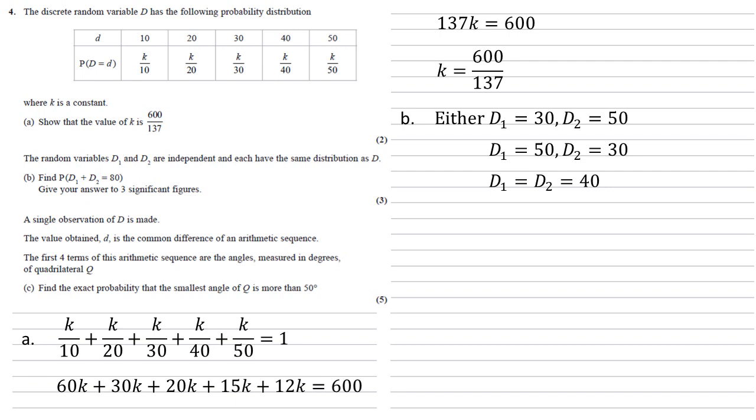Our total probability is going to be these separate probabilities added together. So looking at our table, for 30 and 50 to happen, the probability would be K over 30 times by K over 50. For the second one, it's the same thing but the other way round, but it's still going to be the same result. So we've got two times K over 30 times K over 50.